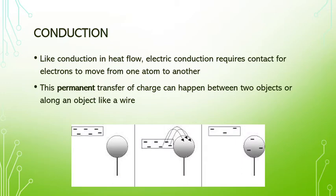Conduction for electricity, very similar to conduction for heat. You take your negatively charged rod, you touch something, electrons move through contact from one object to the other. And when you pull your first object away, you have changed the charge of both items. You have permanently transferred charge. So this is what you're going to see as stuff goes along a wire. Conduction.